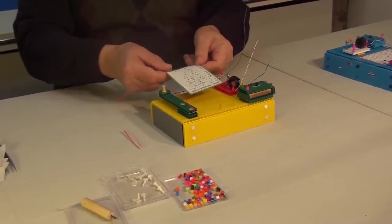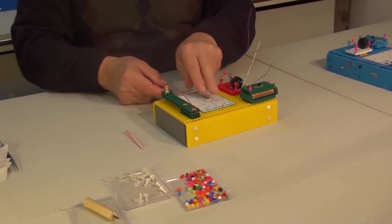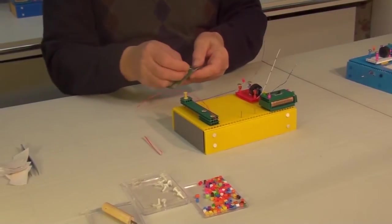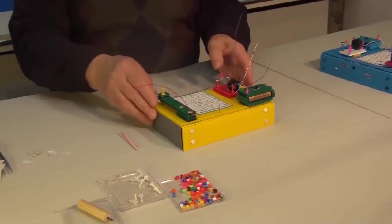It is time to attach the Morse code itself. Peel off the backing and glue it in the center of the box.